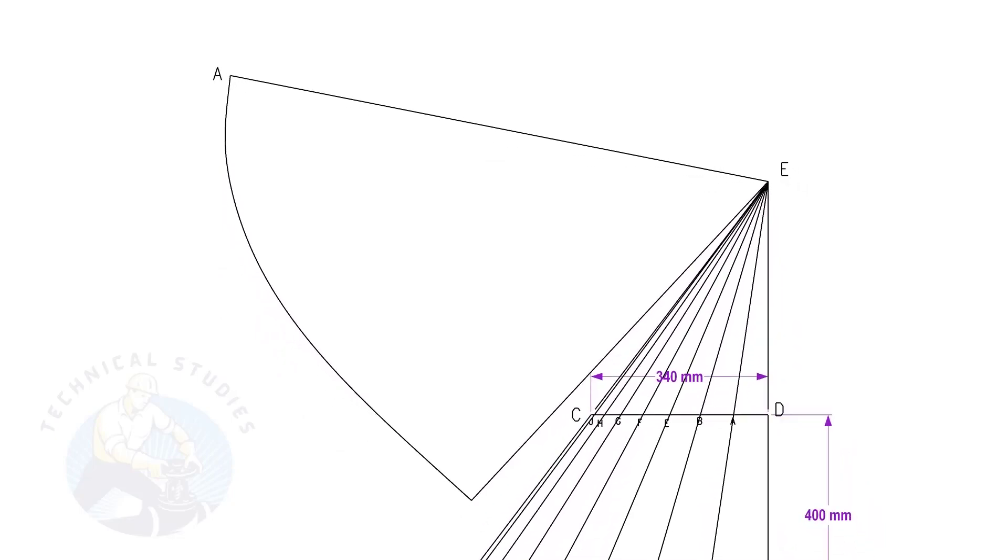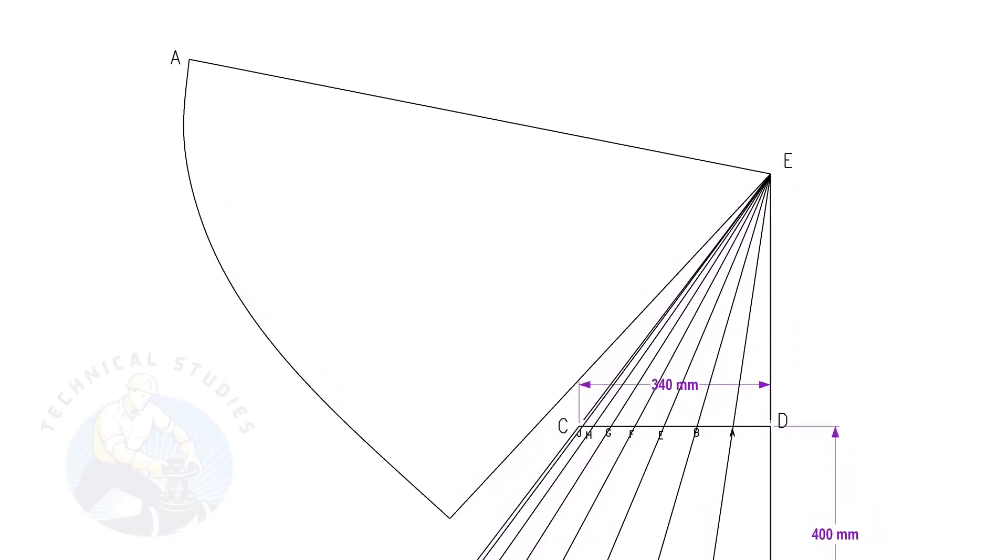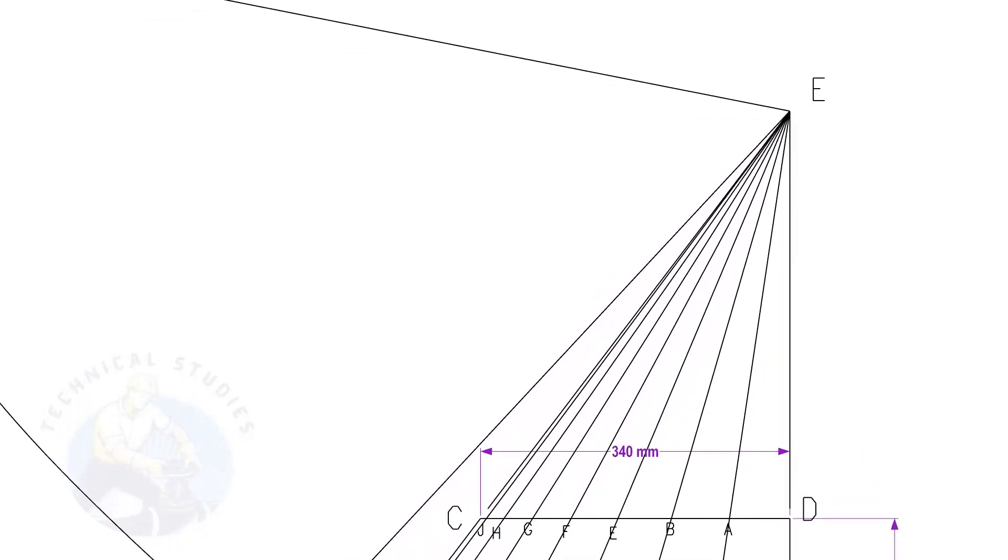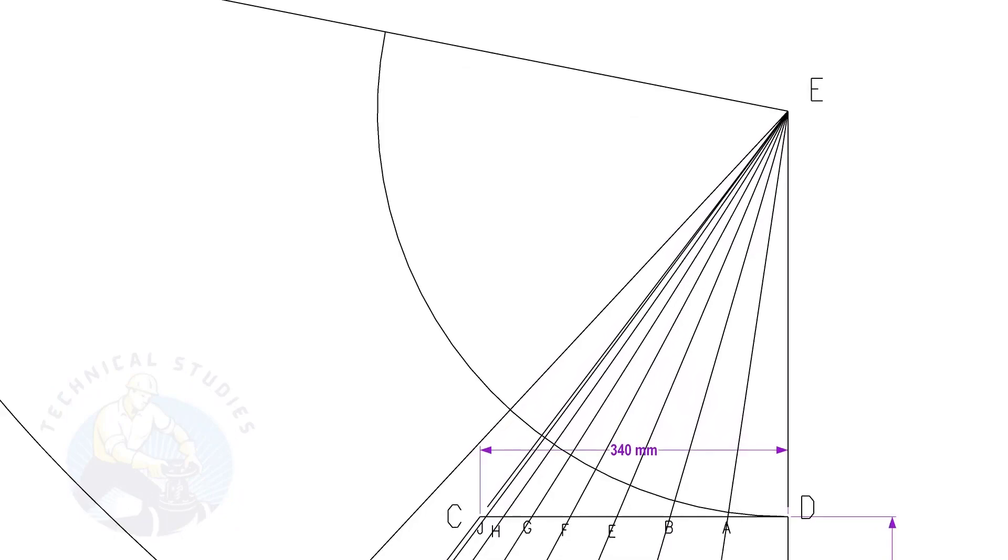Let us draw the top portion of the cone. The procedure is similar to that of the bottom side. Draw arcs ED, EA, EB, etc.